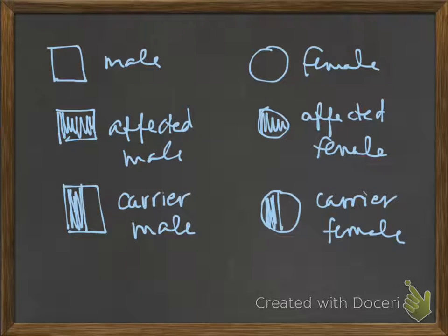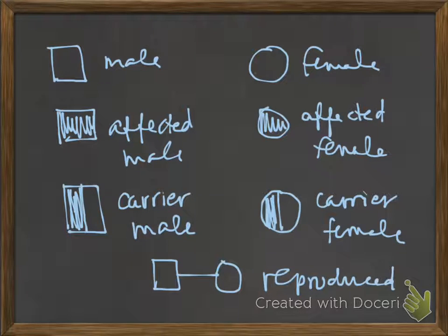Those are your basic symbols. When we have a square and a circle that are joined by a line between them, that means they reproduced, or it means a marriage. Offspring come down off that line. So that would be a couple who have had a daughter, a couple with a single offspring.